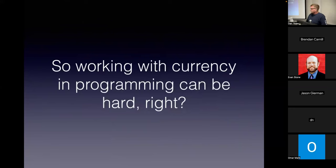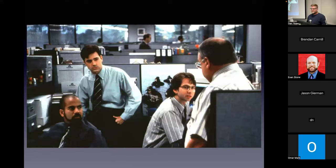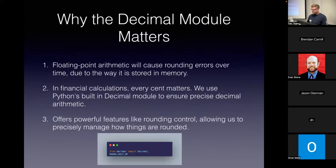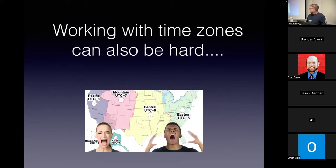Working with currency in programming can be hard. Basic intuition might be to use floating point numbers, but if you've ever seen the movie Office Space, you'll know you cannot use floating point arithmetic in programming — it causes rounding errors over time due to how it's stored in memory. In financial calculations every cent matters, so we're going to use Python's built-in decimal module to ensure precise decimal arithmetic. It offers powerful features like rounding control that let us decide when and how something gets rounded.